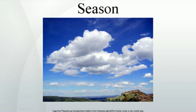Seasons result from the yearly orbit of the Earth around the Sun and the tilt of the Earth's rotational axis relative to the plane of the orbit. In temperate and polar regions, the seasons are marked by changes in the intensity of sunlight that reaches the Earth's surface, variations of which may cause animals to go into hibernation or to migrate, and plants to be dormant.